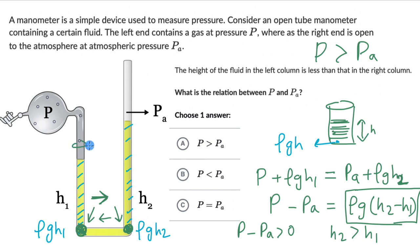So if we say that the area of these two sides of the tube, if area is the same, then pressure is really force divided by area.